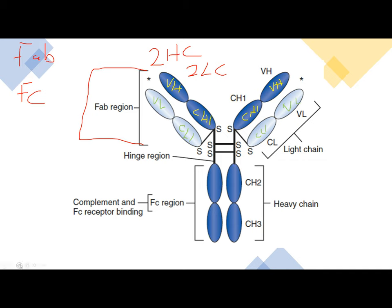The FC region is made up of constant heavy 2 and constant heavy 3. So if asked what is the composition of your FC region, the answer is constant heavy 2 and constant heavy 3.